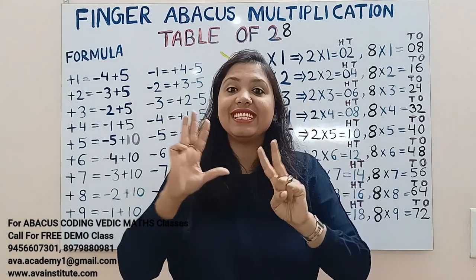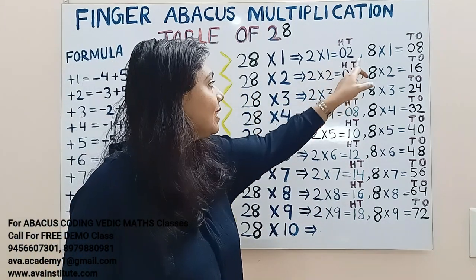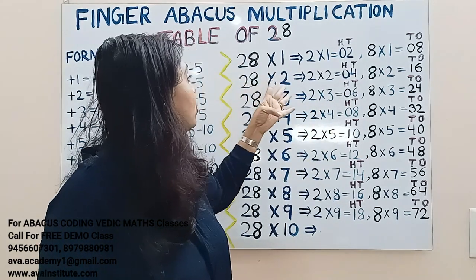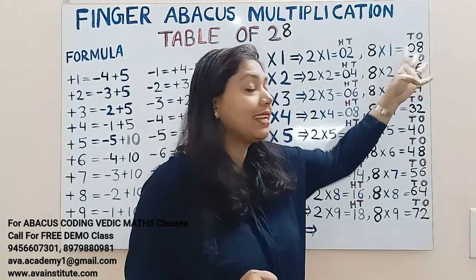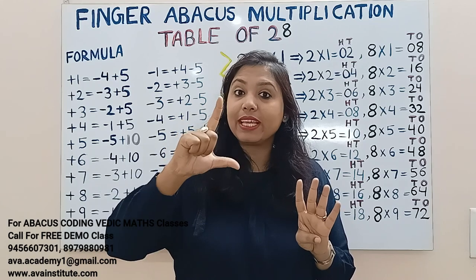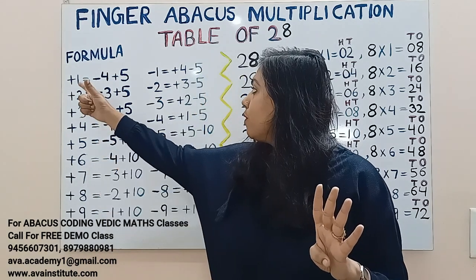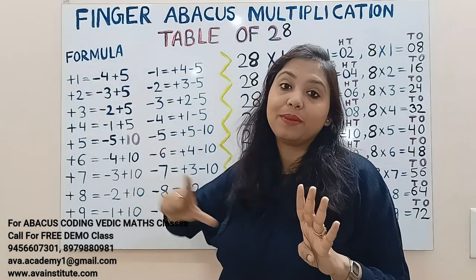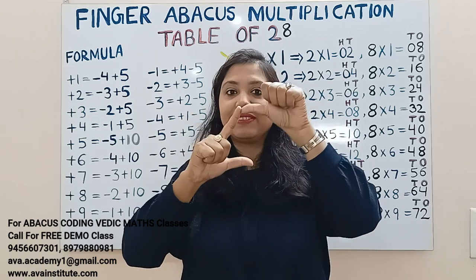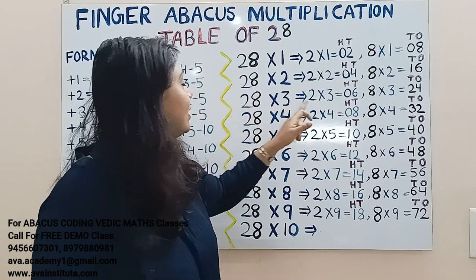Next, 28 twos: 2 twos are 4 — in hundreds: 0, in tens: 4. Now 8 twos are 16 — in tens add 1, in ones add 6. How to add 1 in the tens place: plus 10 formula is minus 40 plus 50. So the answer is 50, 51, 52, 53, 54, 55, 56. 56 is the answer.